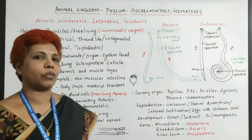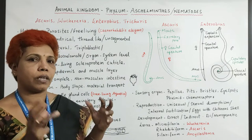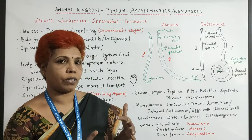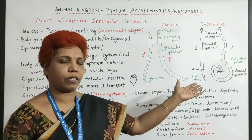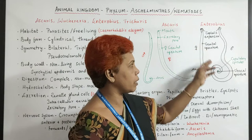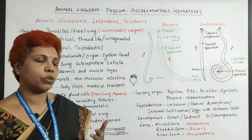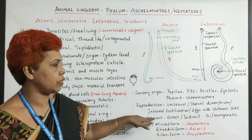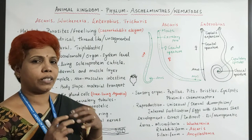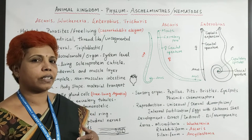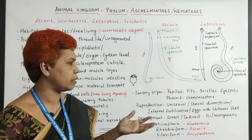Reproduction is very special here. When the animal exhibits sexual dimorphism, it is a higher category. The male has a curved end and the female a straight pointed end. In Enterobius, there is a copulatory spicule to penetrate the female, so internal fertilization occurs. They release eggs with a chitinous shell as a protective covering, which helps manage mortality rates.